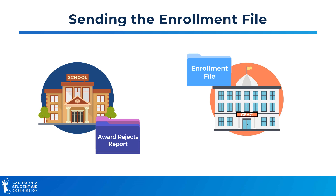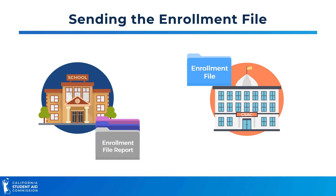The award rejects report includes a list of students who were rejected during the award process due to a mismatch of data between the enrollment record and the CSAC system. Students continue to appear on this report until their record is fixed, and these reports are available once per week. Finally, the enrollment file report contains a list of students who are ineligible or rejected from the school's enrollment file, and is also produced only once per week.